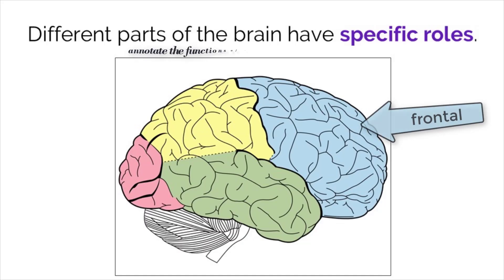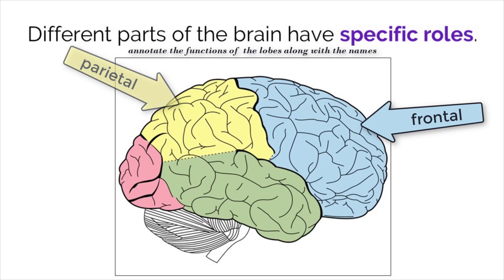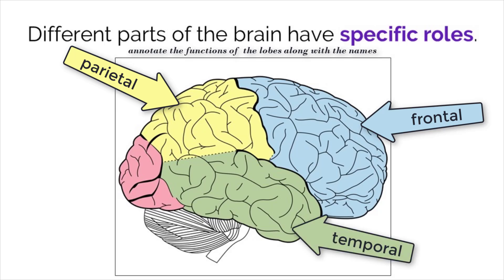The frontal lobe controls motor activity and is associated with higher-order functioning and cognition. The parietal lobe is responsible for touch sensation as well as spatial navigation. The temporal lobe is involved in auditory processing and language comprehension. And the occipital lobe controls visual processing and is responsible for sight perception.